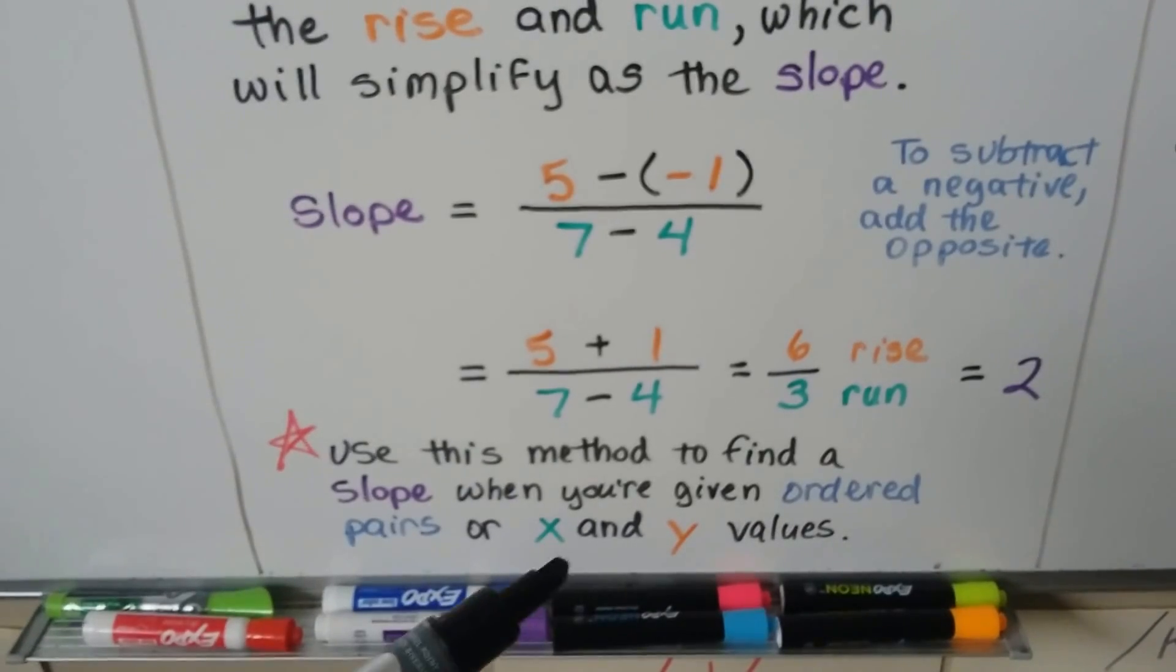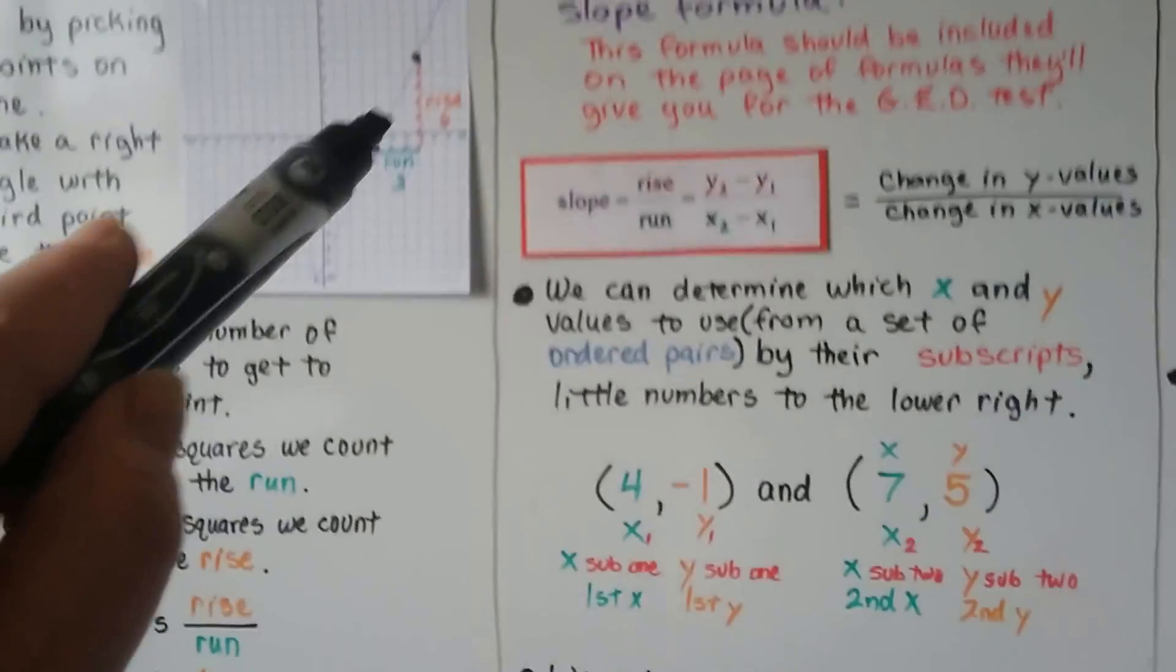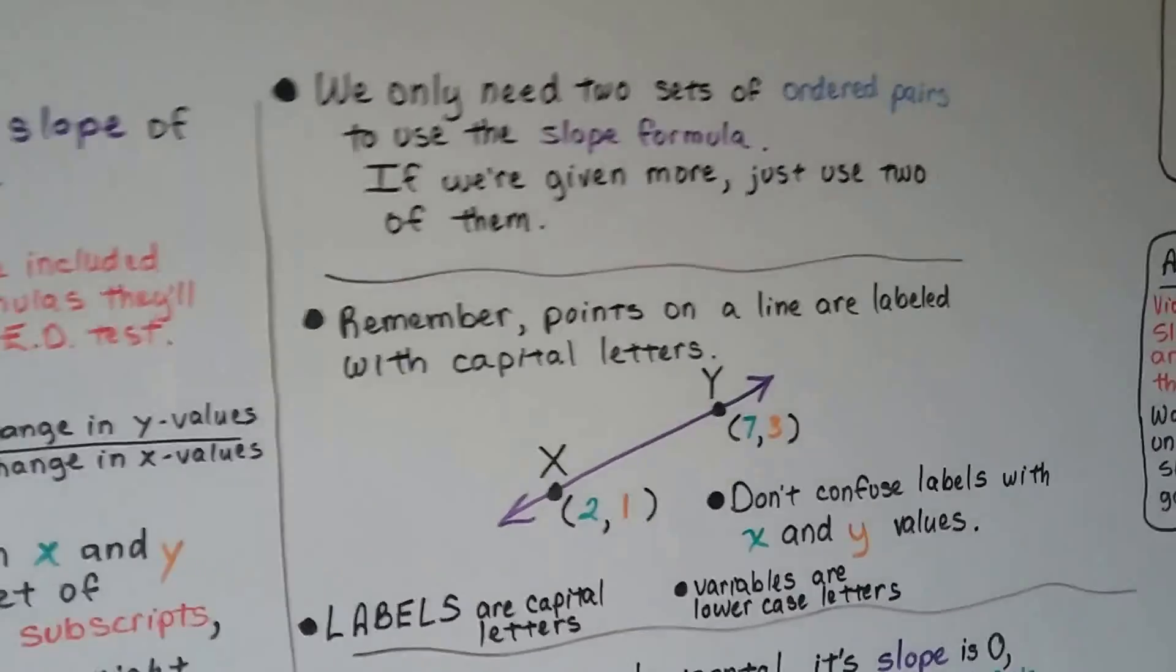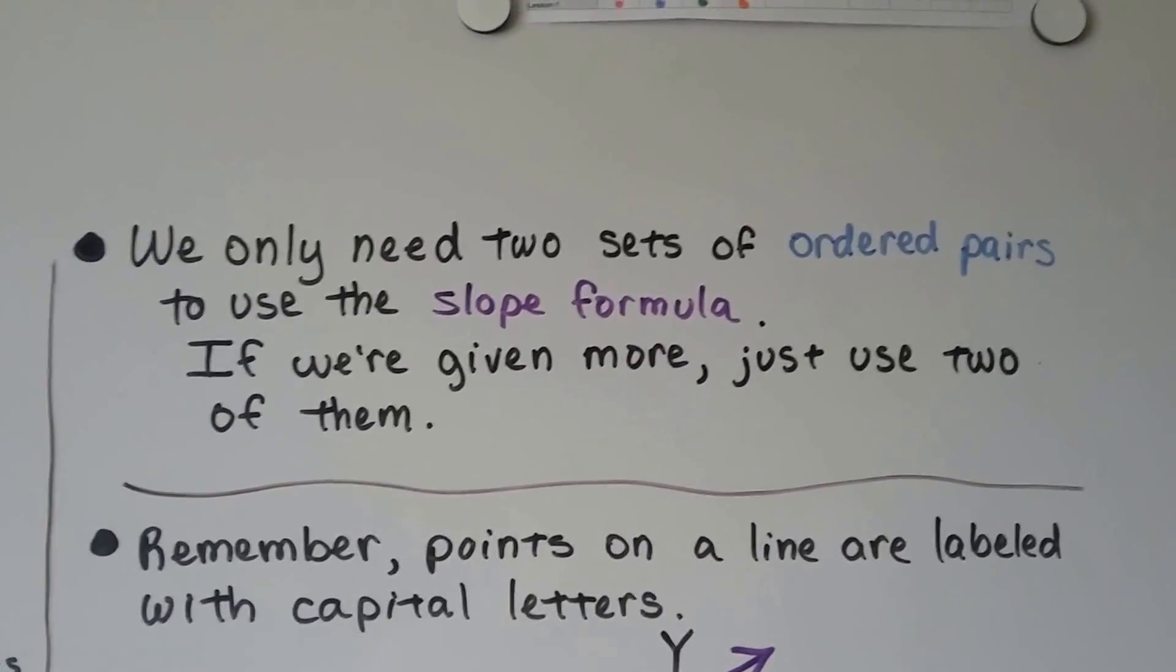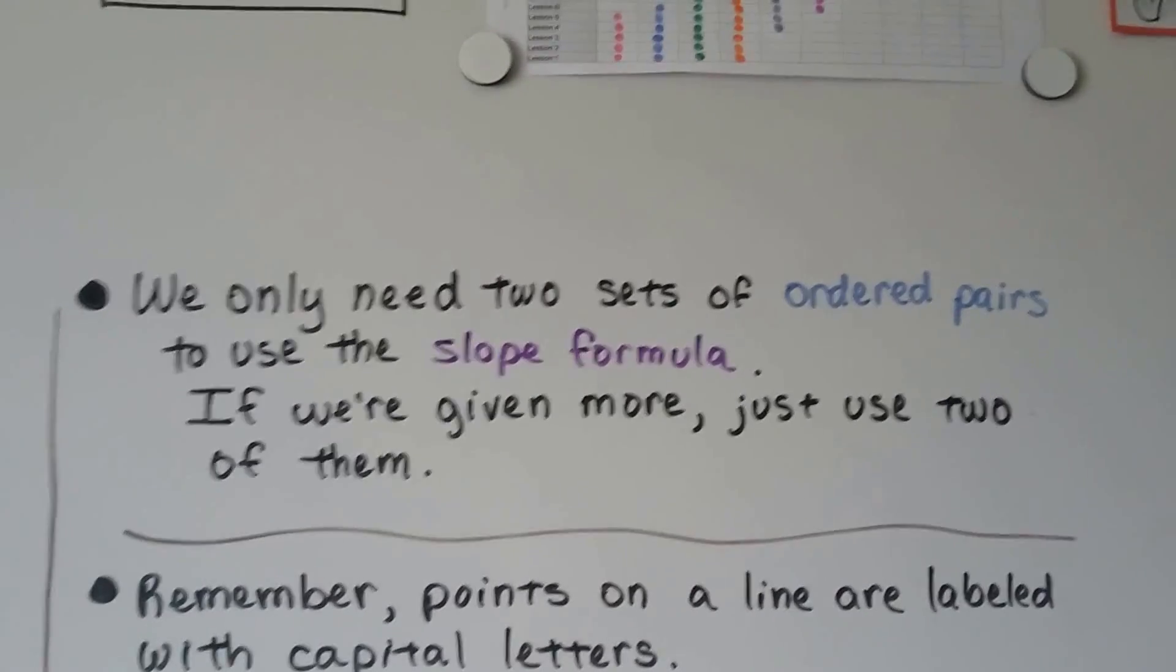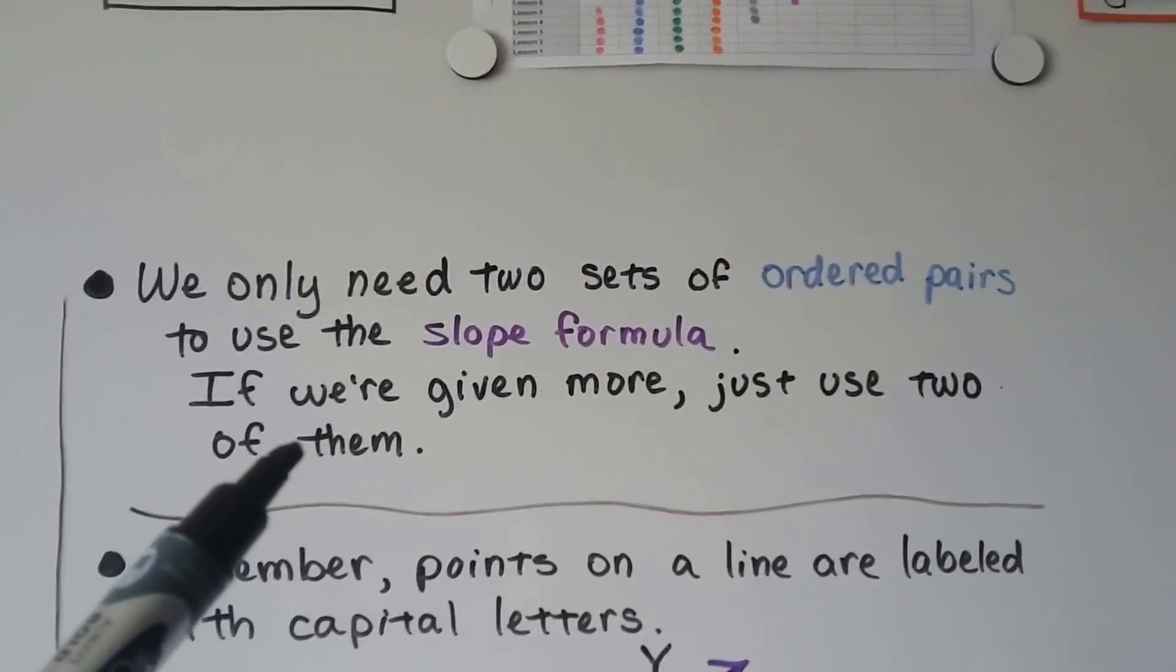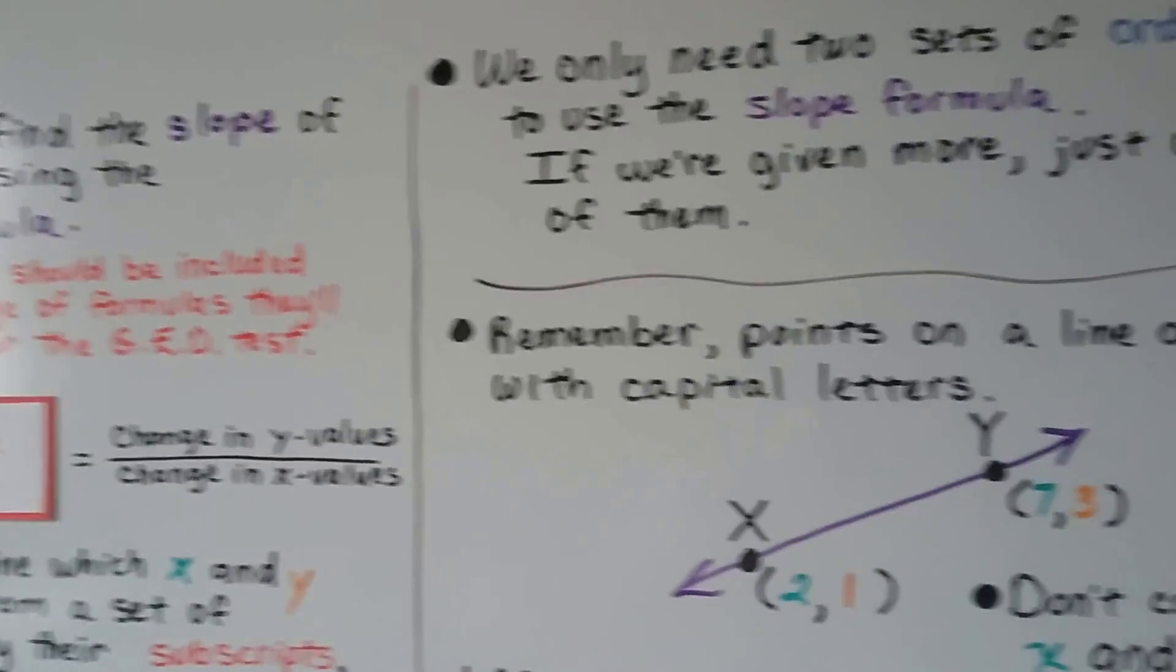And this method is used to find a slope when we're given ordered pairs. So if you're given a graphed line, just count the rise and the run. If you're given ordered pairs, use the formula. We only need two sets of ordered pairs to use the slope formula. If we're given more, just use two of them. If it gives you a graph and ordered pairs, you could use either way. You could graph three ordered pairs and pick two of the points to find the rise and the run, or just pick two of the ordered pairs and substitute them into the slope formula and find the slope.